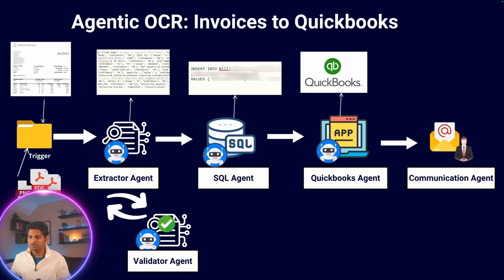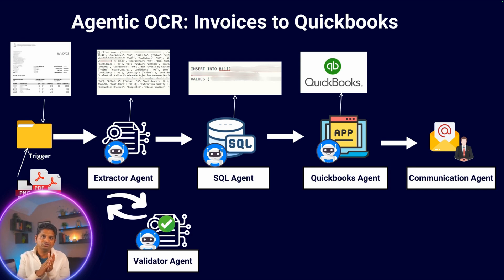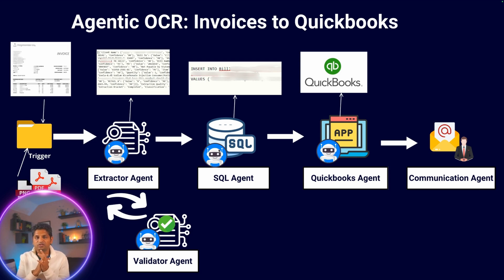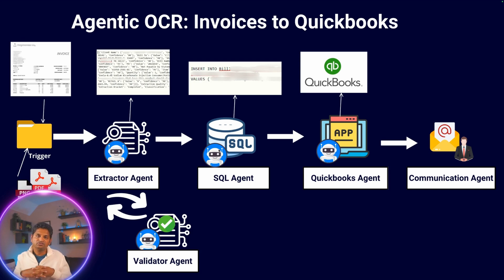We used the Google Gemini Flash 1.5 model to extract data from these invoices into JSON format. The extractor agent passes this to the SQL agent, which converts the extracted information into database queries. These queries are then executed by an application that puts the data into QuickBooks — a popular accounting system. The QuickBooks agent generates a success or failure result, which is passed to the communication agent, which notifies managers or users about successful processing or any issues.